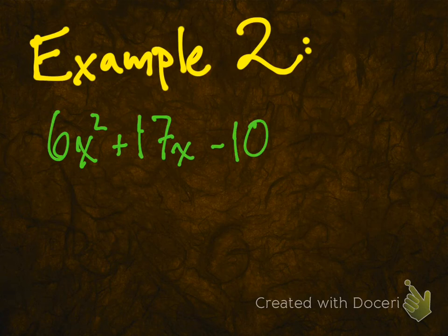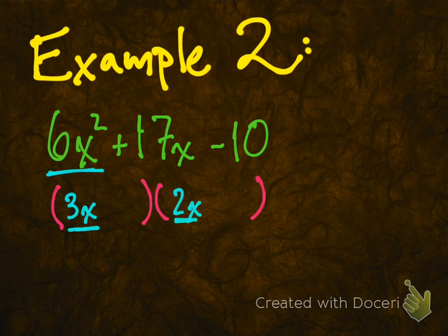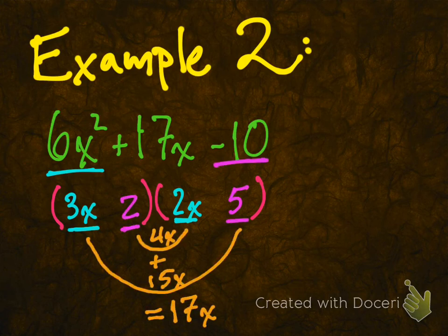And we'll try this time 6x squared plus 17x minus 10. Again, that last product there is negative. So we got a couple things to keep in mind there. Let's set up our parentheses, and let's just jump in with 3x times 2x. That makes 6x squared. Let's just give it a try. If we need to, we can change it later. And negative 10. How about 2 and 5? Well, that'll give me an inner product of 4x and an outer product of 15x.